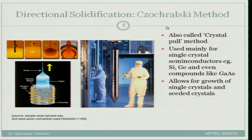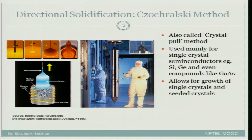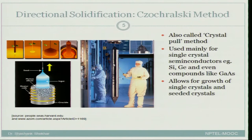The second directional solidification method is very common in the electronic industry. What you see here is a very long single crystal of silicon — there is a human being standing nearby, so this single crystal may be about 10 feet in length and 1 to 2 feet in diameter. That is the kind of size you can get using the Czochralski technique.